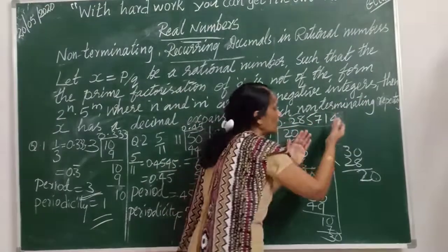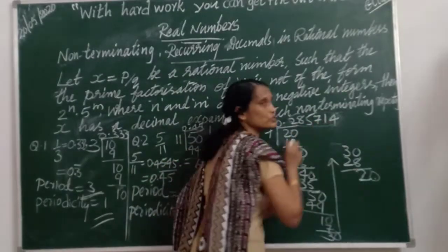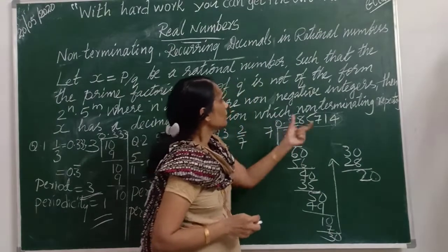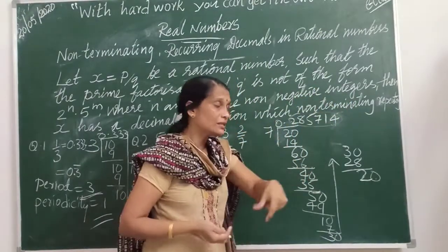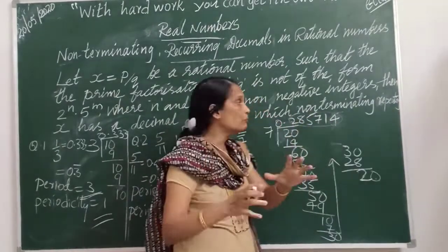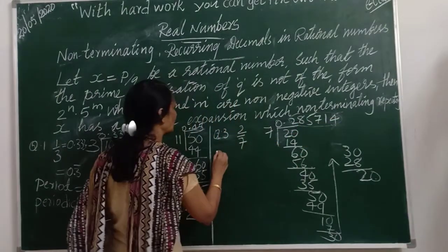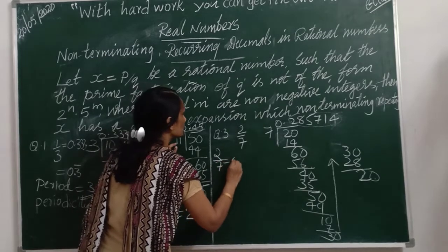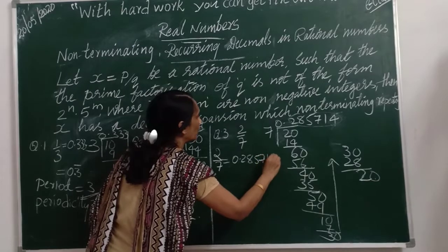How many digits are repeating? 1, 2, 3, 4, 5, 6 — so in this block there are 6 digits. Therefore the periodicity is 6. And what is the period, or the block which is repeating? It is 2, 8, 5, 7, 1, 4. So we can write 2 by 7 as 0.285714.